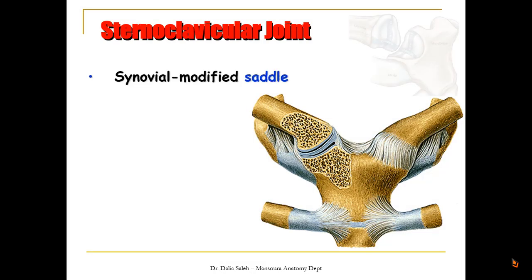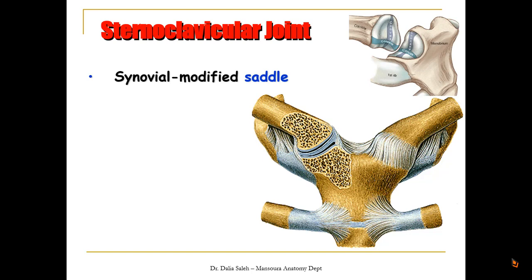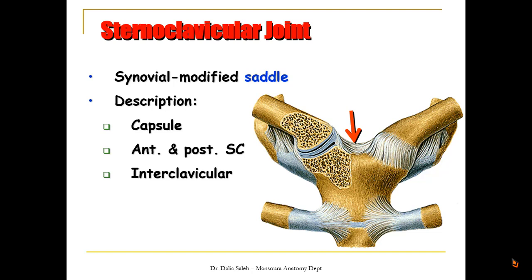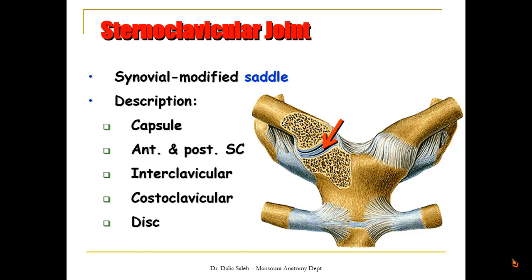We start first with the pectoral girdle, which is formed of two joints: the sternoclavicular and the acromioclavicular joint. The sternoclavicular joint is a synovial modified saddle joint. Saddle joints move in biaxial direction, while the modified saddle allows a little bit of rotation as well. It is formed of the medial end of the clavicle that fits into the clavicular notch on the manubrium sterni. It is surrounded by a capsule enforced by the anterior and posterior sternoclavicular ligaments, the interclavicular ligament, and the costoclavicular ligament. Inside, there is a fibrocartilaginous disc that divides the joint cavity into two compartments.